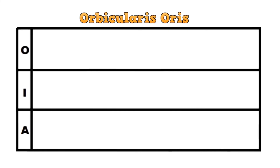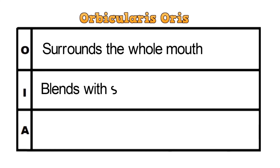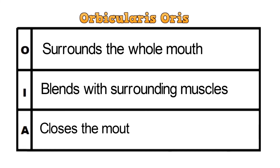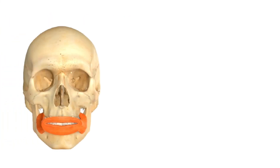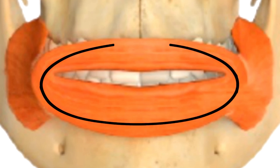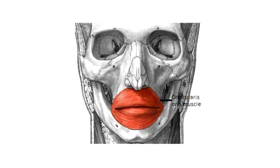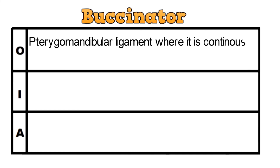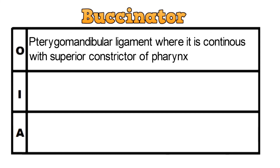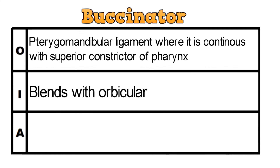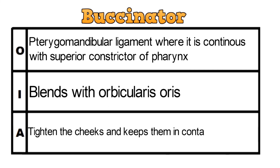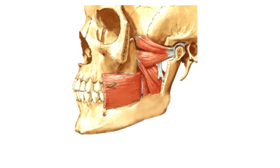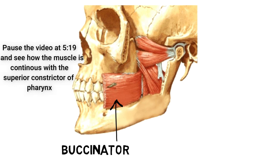Moving on to the next muscle: the orbicularis oris. This muscle surrounds the whole mouth and blends with the surrounding muscles. Its action is to close the mouth and protrude the lips. This muscle in the black circle is the orbicularis oris, and as you can see it surrounds the whole mouth. The next muscle is the buccinator. This muscle originates from the pterygomandibular ligament, where it is continuous with the superior constrictor of the pharynx. It blends with the orbicularis oris, and its action is to tighten the cheeks and keep them in contact with the gums. These muscles which you can see are the buccinator.